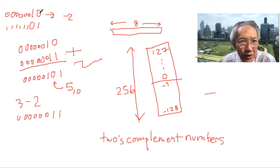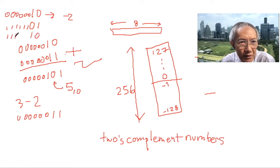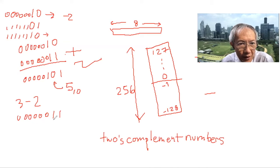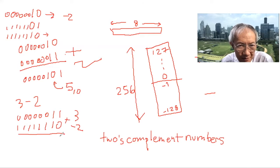After inverting we get this pattern, and then plus one gives us the two's complement representation of minus two. So we add number three with this negative two representation — that is zero one one plus one one one zero.